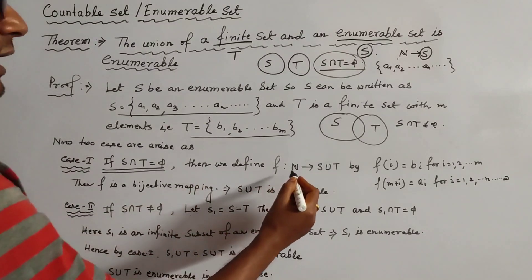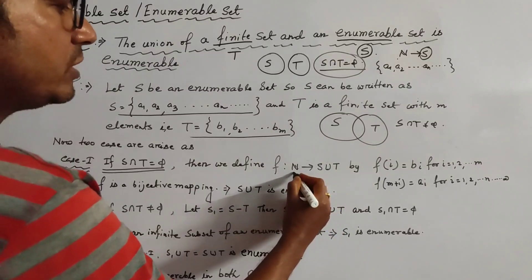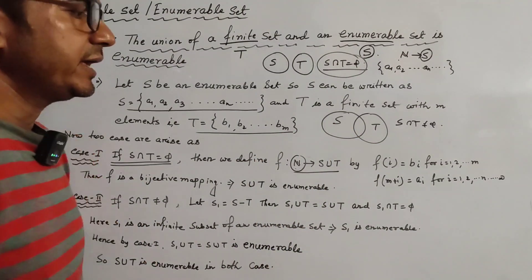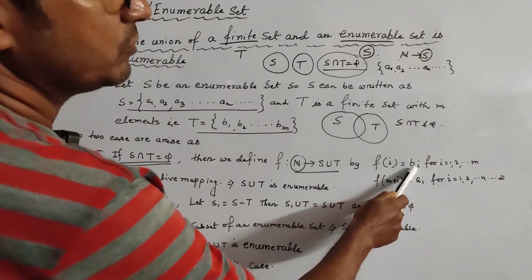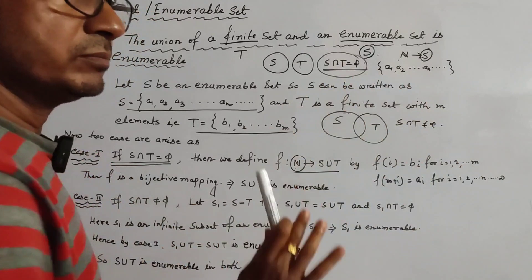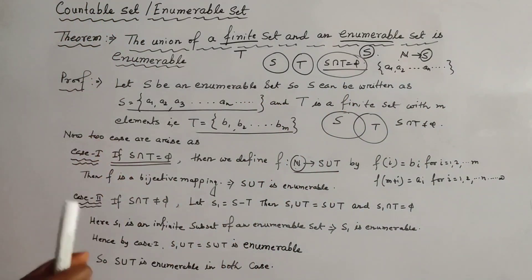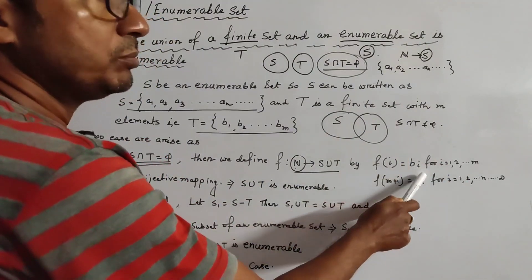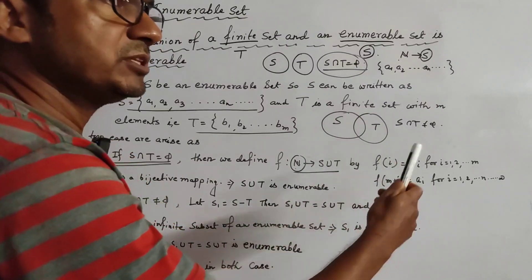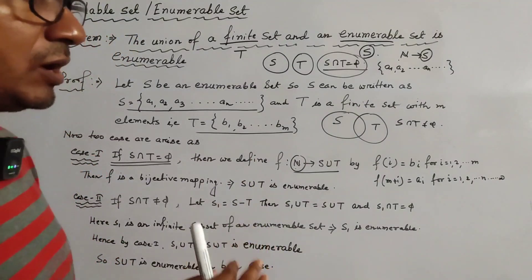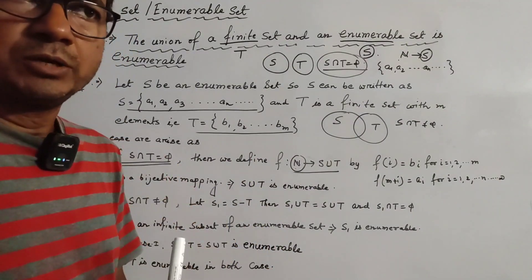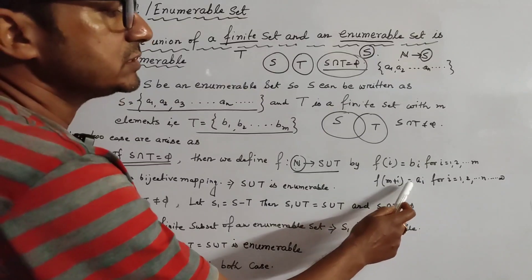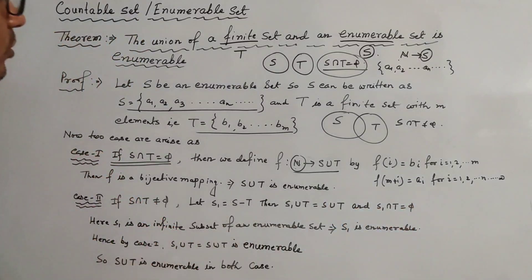If S ∩ T = ∅, we define a mapping f from ℕ to S ∪ T as follows: f(i) = Bᵢ for i = 1, 2, ..., M. So the first M natural numbers map to the M elements of T — that is, f(1) = B₁, f(2) = B₂, ..., f(M) = B_M. After the first M natural numbers, we get M+1 onward, and we define f(M+i) = Aᵢ, taking elements from the infinite set S.